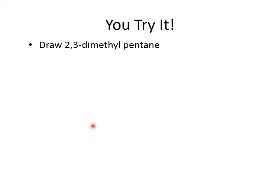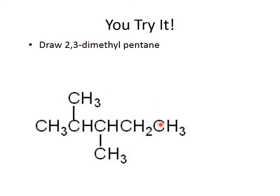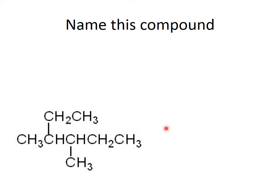Go ahead and draw 2,3-dimethylpentane. Here is 2,3-dimethylpentane: here is the pentane chain, and on the number two and number three carbons you have methyl groups. You could flip this and draw it with two carbons on one side and one on the other — that's fine. We don't draw molecules left to right or right to left; they can be written in any conformation. Now go ahead and name this compound. The longest chain is hexane. On carbons three and four there are two methyls, so this is 3,4-dimethylhexane.